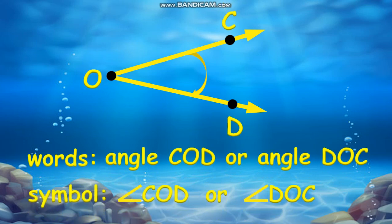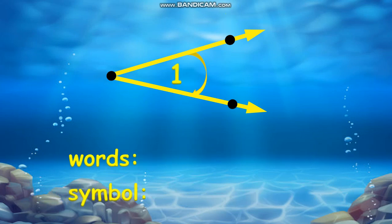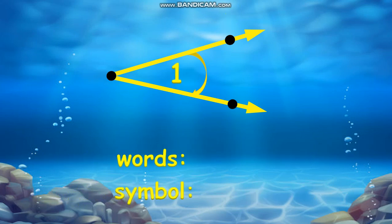Another way of naming an angle is by using a number or a letter written in the interior of the angle. Therefore we can call that angle 'angle 1' in words and symbols, and this one is 'angle A' in words and symbols.